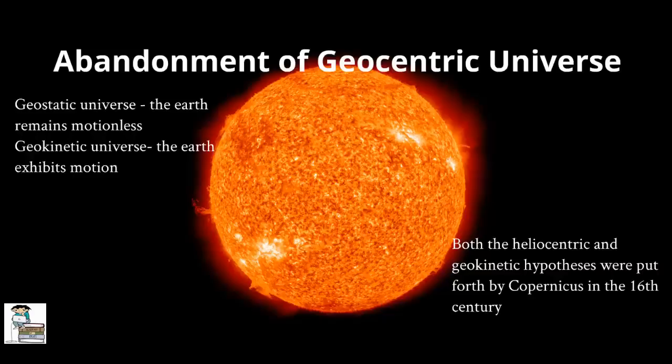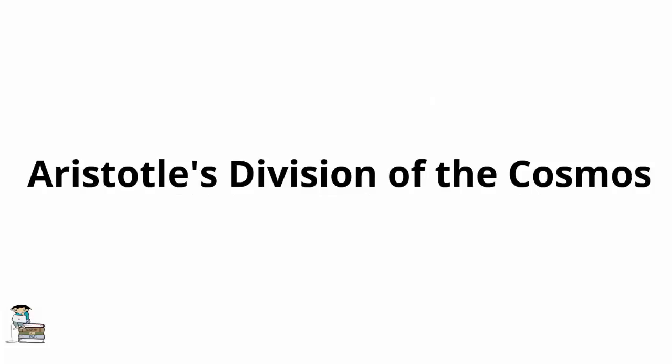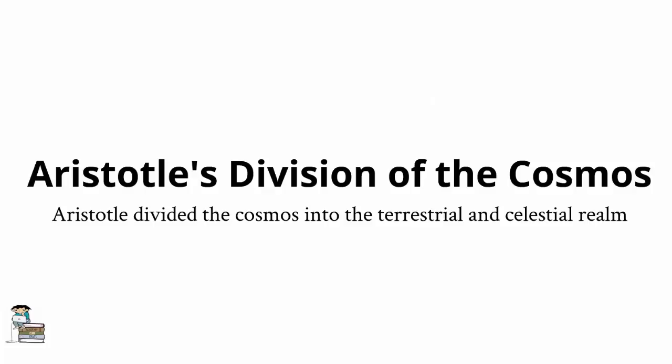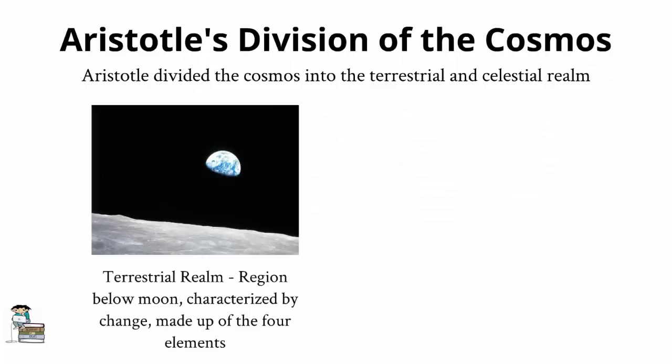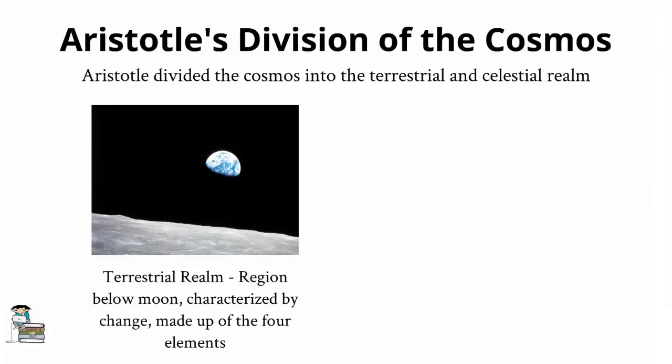Aristotle also emphasized the division of the cosmos into two realms, but this view was also largely relinquished by the end of the scientific revolution. These two realms which the universe was supposedly divided into were the terrestrial realm and celestial realm. The terrestrial realm, according to Aristotle, was the region below the moon and included the earth. This realm was made up of the four elements, earth, water, air, and fire, and characterized by change.